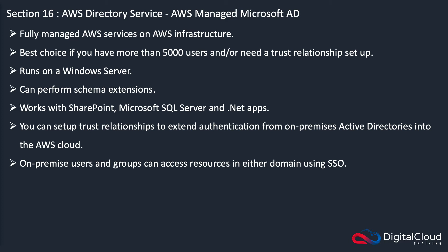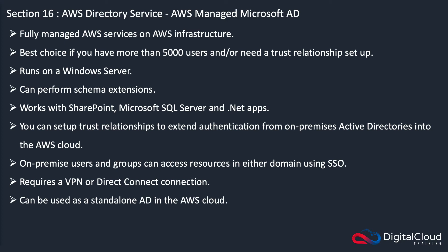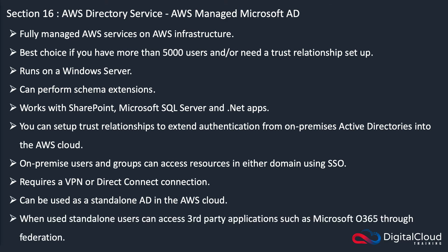On-premises users and groups can access resources in either domain using SSO — single sign-on. It does require a VPN or Direct Connect connection. It can also be used as a standalone Active Directory — you don't have to set up a trust relationship. When used as standalone, users can access third-party applications such as Microsoft Office 365 through federation using a Federation Services server.